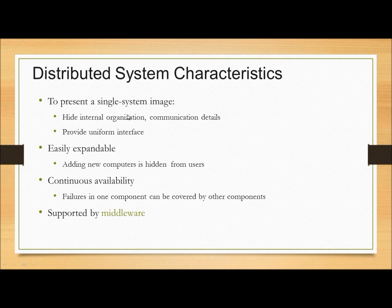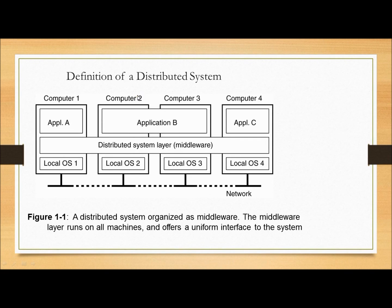Distributed file system characteristics: to present a single system image, we need to hide internal organization and communication details. We need to provide a uniform service interface. It is easily expandable by adding new computers, hidden from users. Continuous availability — failure in one component can be covered by other components. It is supported by middleware. This figure shows the sharing of data in a distributed file system, where multiple client process systems are virtually connected via a middleware layer and physically connected via the network.